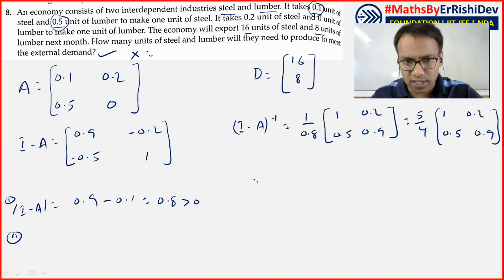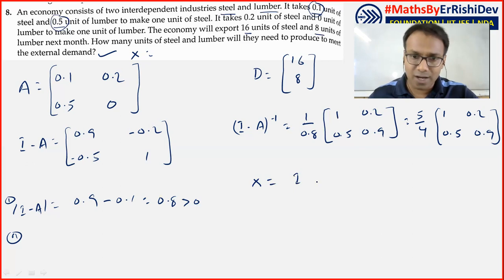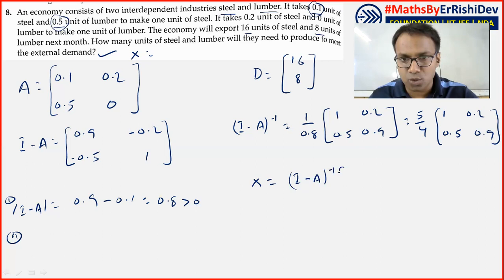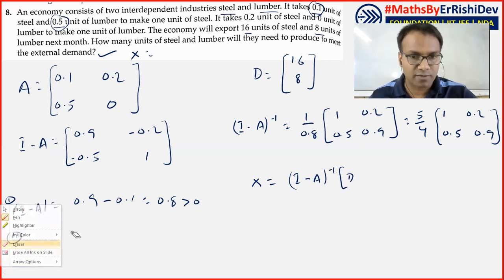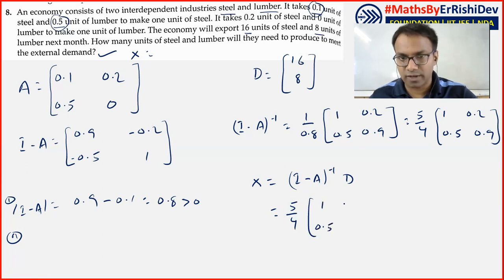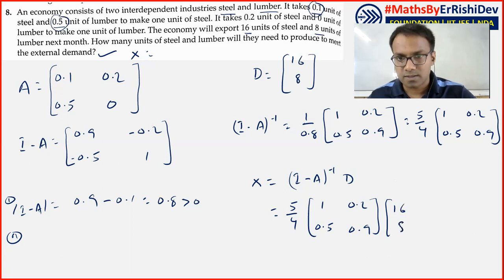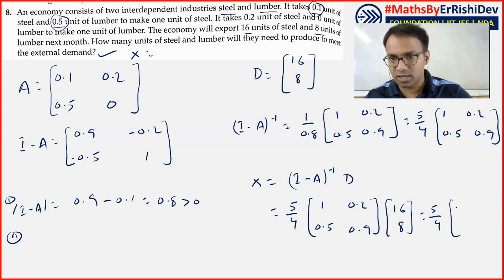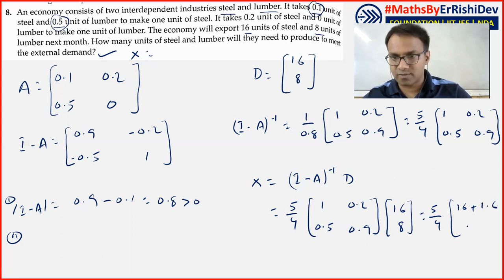Final gross output X equals (I-A) inverse times D. So X = (5/4) × [1, 0.5; 0.2, 0.9] × D, where D = [16; 8]. Calculating: 1×16 + 0.5×8 = 16 + 4 = 20; then 0.2×16 = 3.2, add to partial... and 0.9×8 = 7.2. Computing the first element: 1×16 + 0.5×8 = 17.6; second element: 0.2×16 + 0.9×8 = 3.2 + 7.2 = 10.4... wait — let me recalculate with 5/4 multiplier.